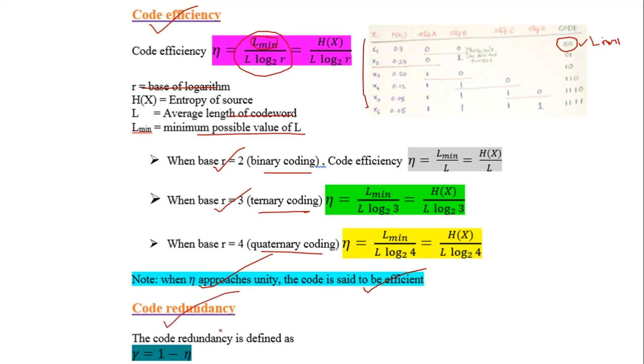Code redundancy is defined as γ = 1 - η.